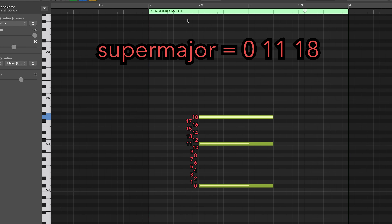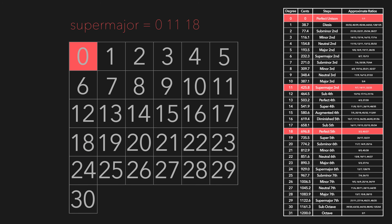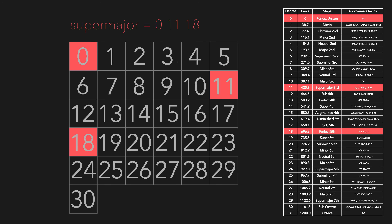Since EDO step is movable and not a fixed system, 0 can be any note we select. So if we put our root on C and played 0, 11, 18, we'd get a C supermajor chord. We could just as easily put this on G and get a G supermajor chord. EDO step is very helpful in describing the structure of a microtonal chord or pattern of a subset, rather than defining specific letter notes.